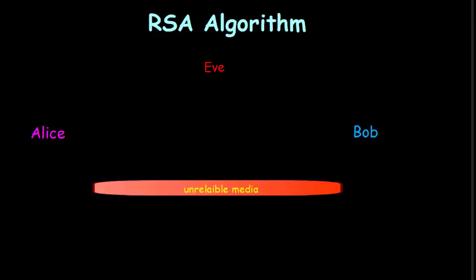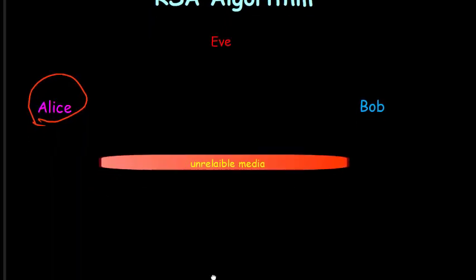Welcome to the network security algorithm series. Today we'll be covering the RSA algorithm, which is used to generate the public and private key for any entity. This algorithm is based on asymmetric key cryptography, where each entity must generate a public and private key pair. One of the algorithms used for this is RSA. Let us consider an entity, Alice, who wants to generate a private and public key pair using the RSA algorithm.